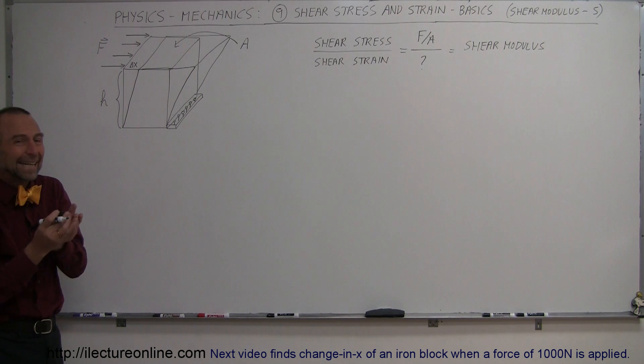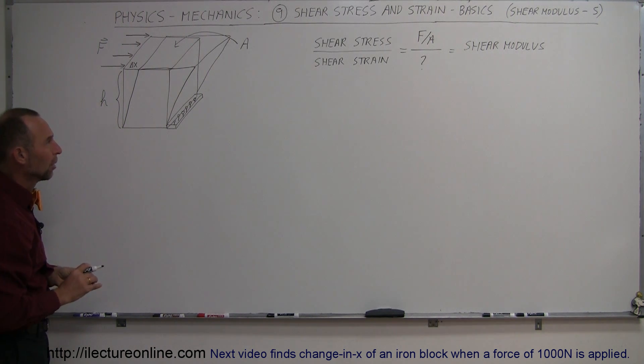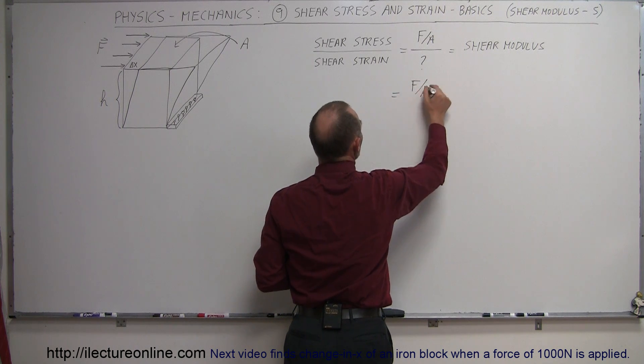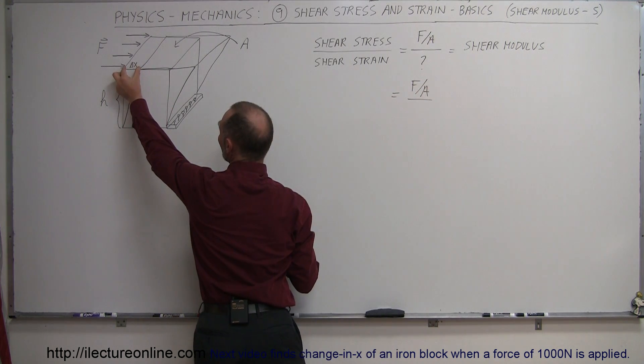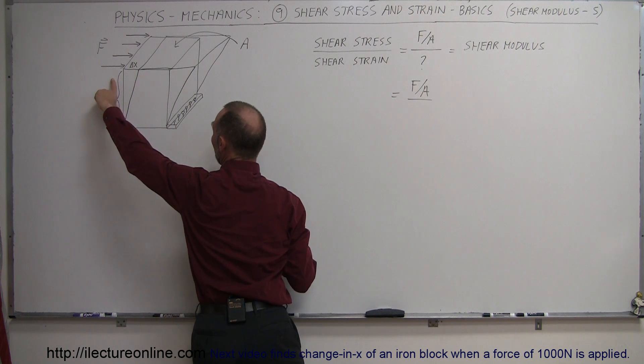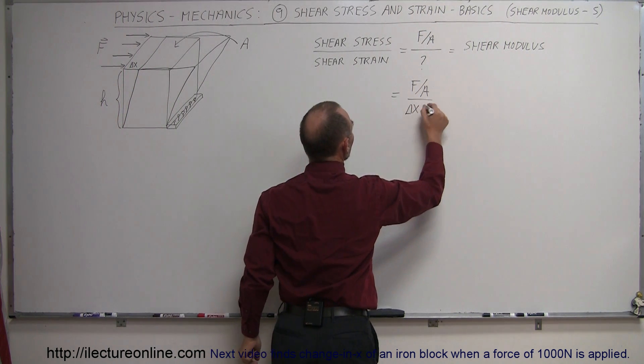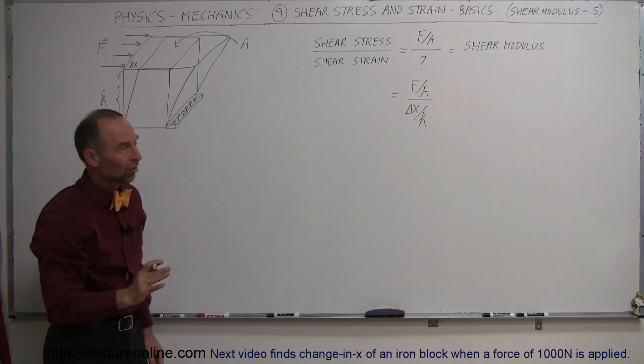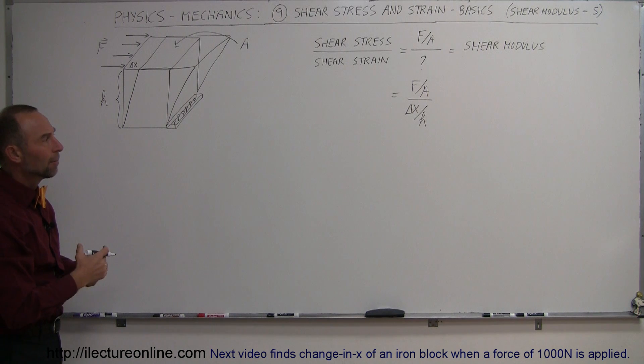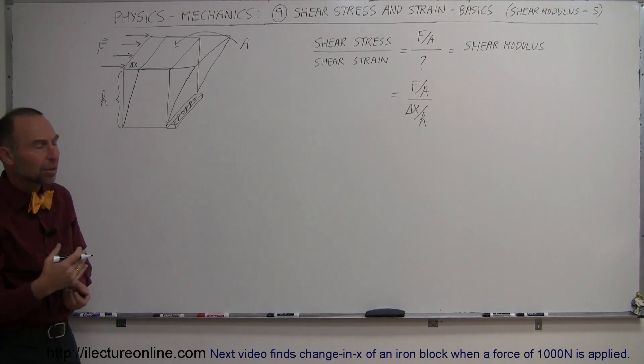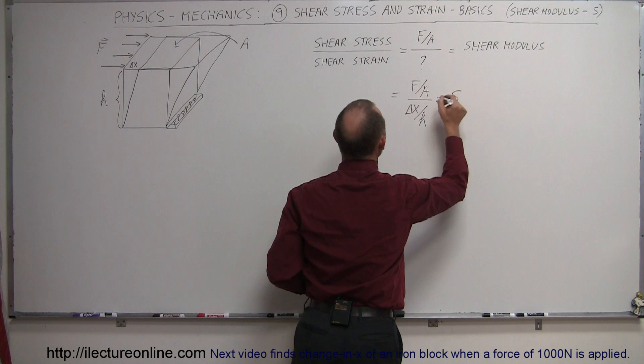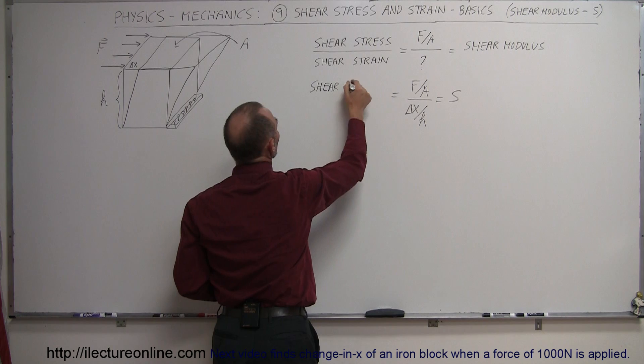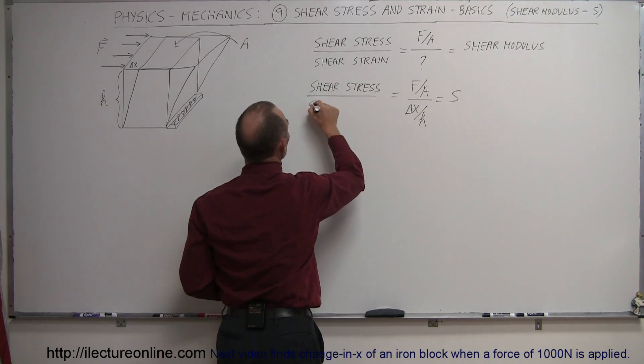Therefore, the shear strain can be defined as the amount of deformation in this direction as a function of the height of the material. So this will be delta x divided by h. And this is the ratio of shear stress divided by shear strain, which is defined by the strength of the material as the shear modulus. We're going to call this equal to S, and that's simply the ratio of shear stress divided by shear strain.